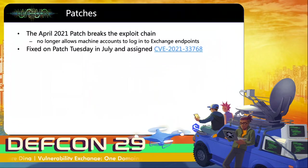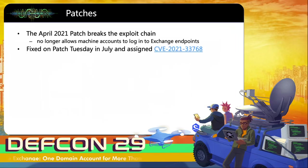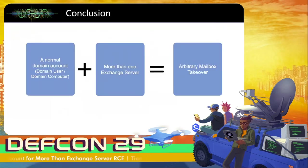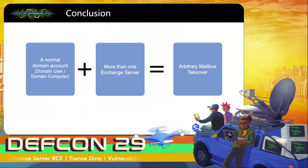Let's talk about the patches. The April patch breaks this exploit chain because it no longer allows machine accounts to log in to any Exchange endpoints. The vulnerability was fixed in the July patch and assigned CVE-2021-33768. In conclusion, if you have compromised a normal domain account — a domain user or machine account — and there is more than one Exchange server in the Active Directory, you can take over any Exchange user's mailbox.